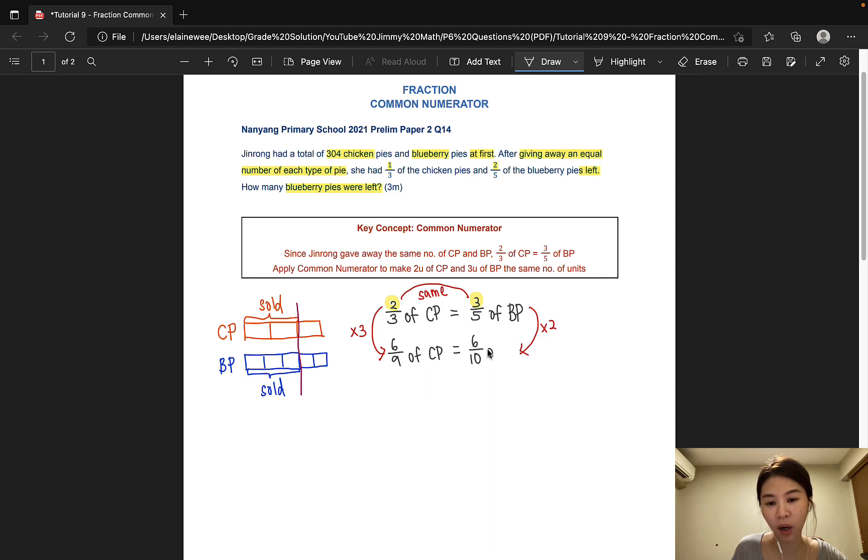Over 10 units of blueberry pies. Now that we have made these two units the same, that would mean that we can compare these two fractions on the same scale. That means that there were 9 units of chicken pies and 10 units of blueberry pies at first. So let's add that up.